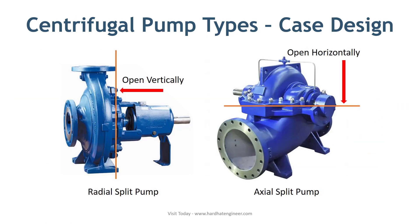The fifth method to classify pumps is based on case design. There are two types. The first is the radial split case, where the pump casing opens perpendicular to the shaft axis and parallel to the impeller. The second is axial split, where the pump casing is split into two halves that separate horizontally, parallel to the shaft axis. Just look at the image — you will immediately understand. It is essentially how you open a pump for maintenance.